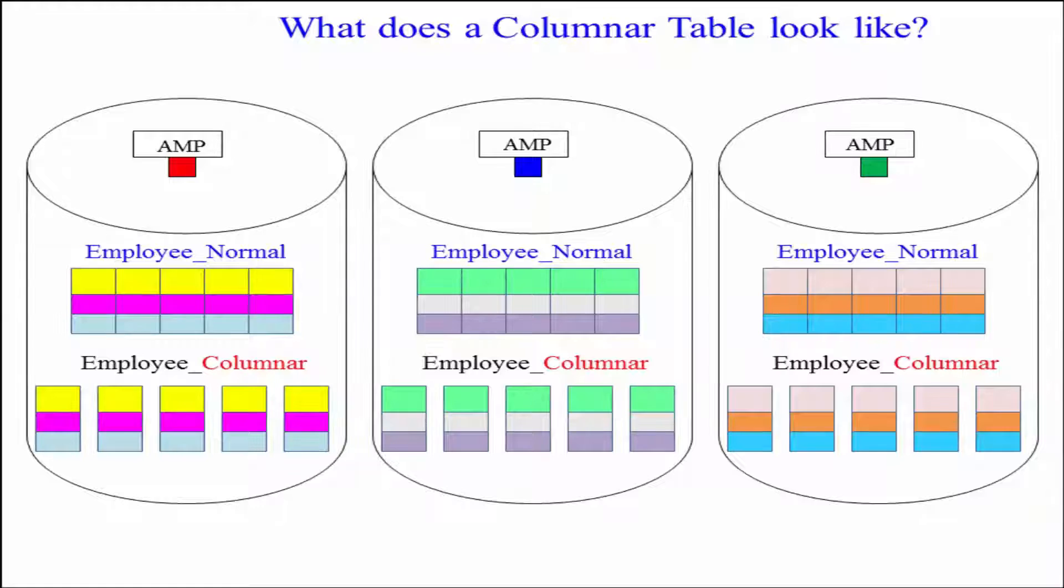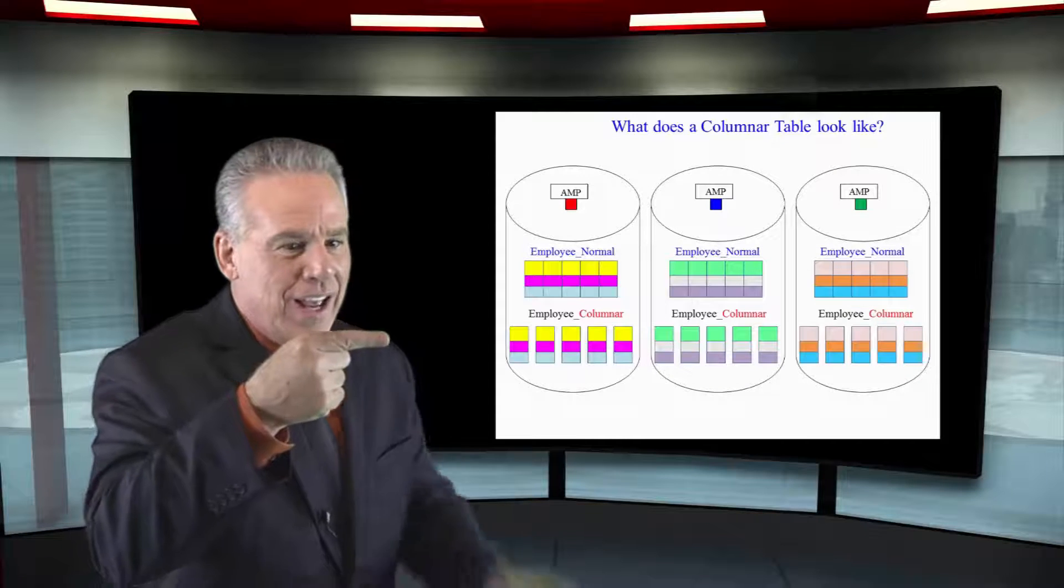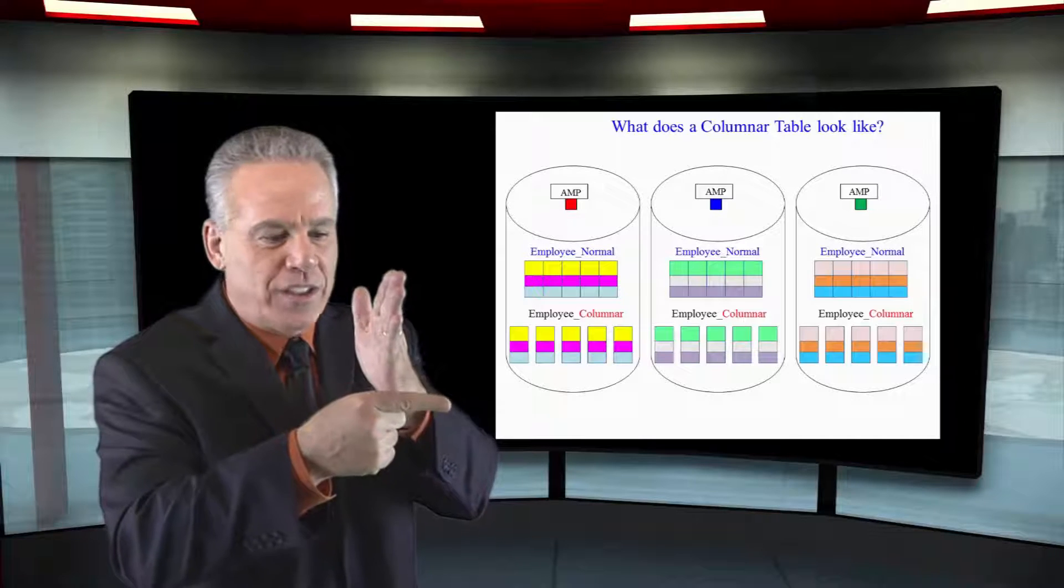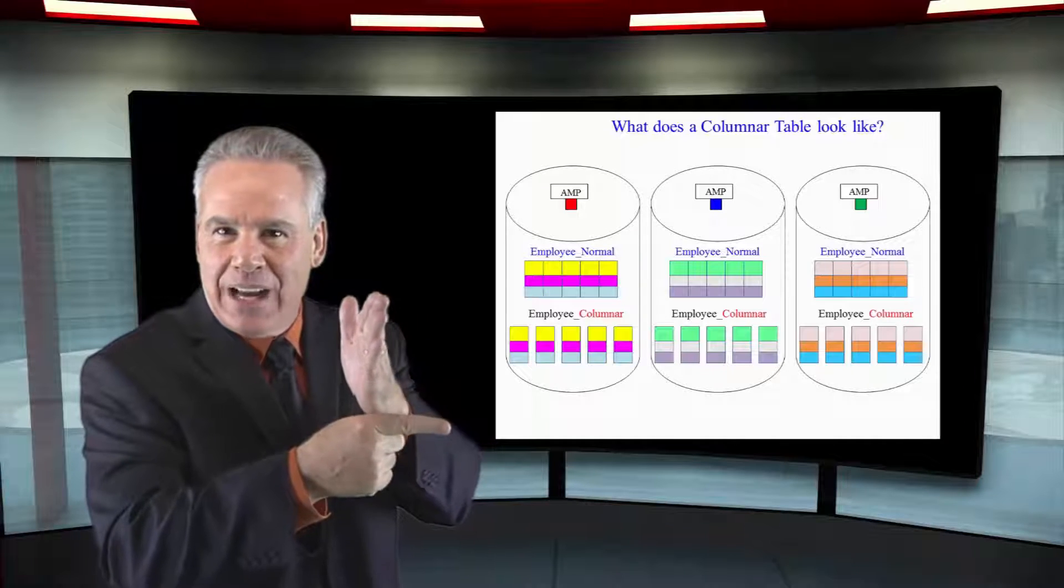Here's the second thing. Understand that an AMP in the top gets the entire row. We've always seen that in Teradata. But in the columnar, the AMP still gets the entire row. They're just breaking up each column, almost as if they're in separate blocks.